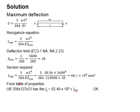In this case, this section, UB 356x127x33, is selected. Its second moment of inertia is 82.49 times 10 to the power of 6, which is greater than the required I. Therefore, we will know that this section will pass the deflection check.